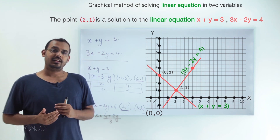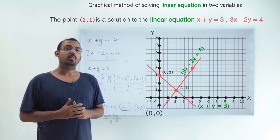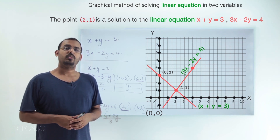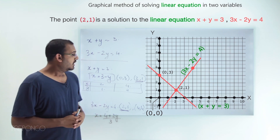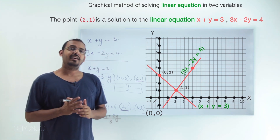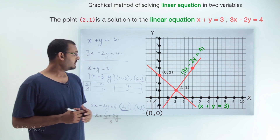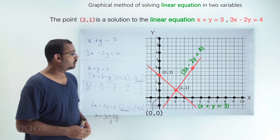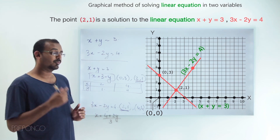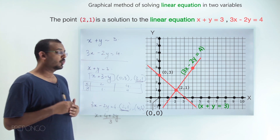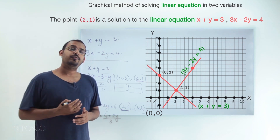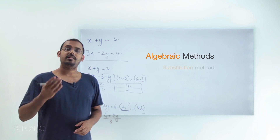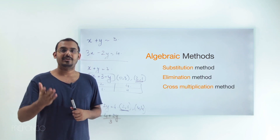In the next lecture, we'll move on to the algebraic methods. But why do we need algebraic methods when we can use the graphical method? The lines we used here are fairly simple, but equations can get more complex, making it inconvenient to always plot them on a graph and find their intersection. So we need a more convenient way. In the next lecture, we'll study the substitution method, elimination method, and cross multiplication method. See you in the next lecture.